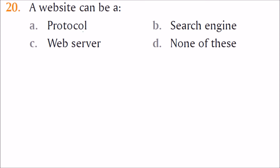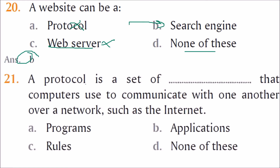A website can be a protocol, web server, search engine, or none of these. It cannot be a protocol — those are rules or guidelines. A web server is where the website is stored. A website can be a search engine, so the answer is B. A protocol is a set of rules that computers use to communicate with one another over a network such as the internet, so the answer is C.